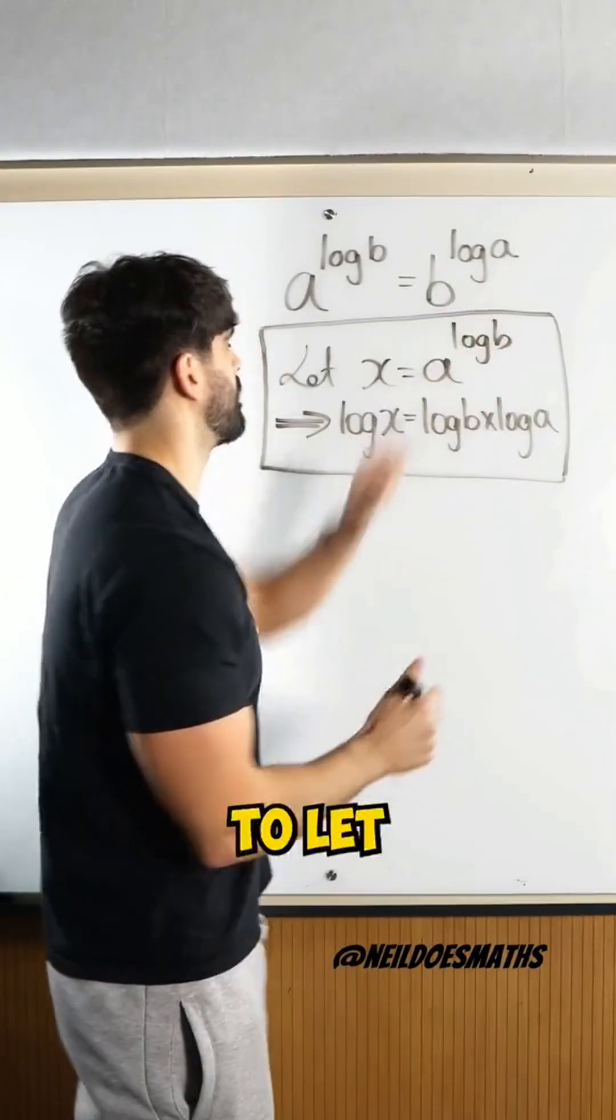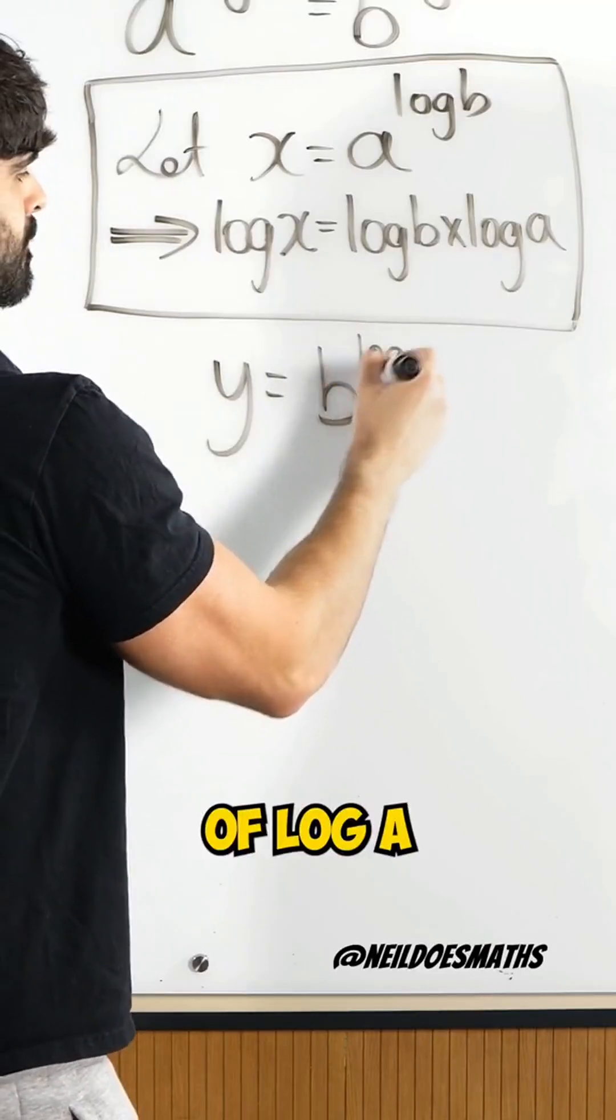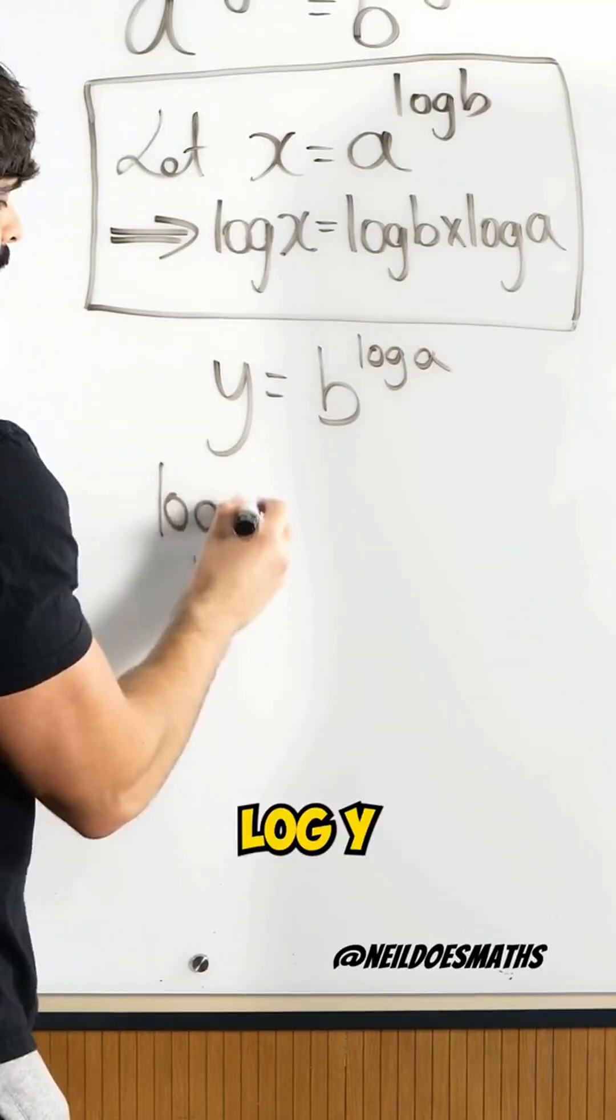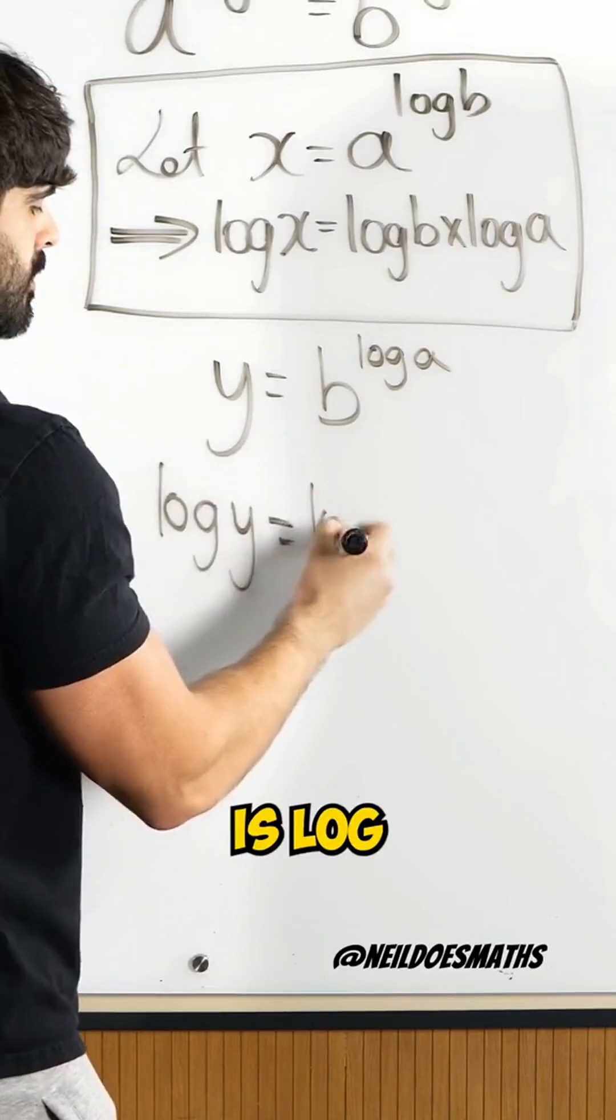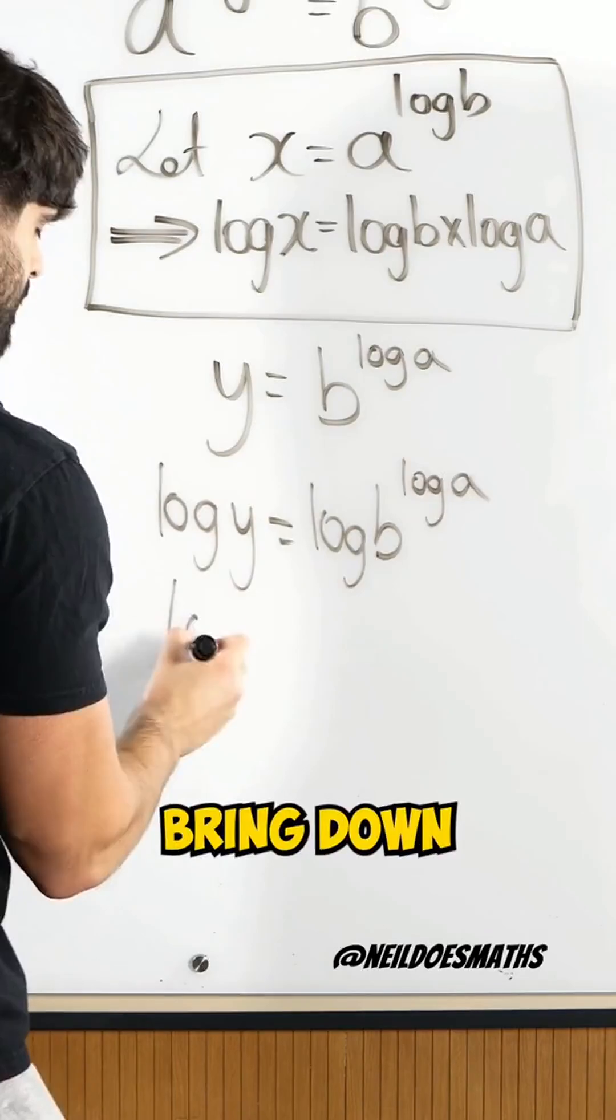Now let's do the same here. I'm going to let y equal b to the power of log a. And I'm going to log both sides. I'll get log y is log of b to the power of log a. And then I'm going to bring down that power.